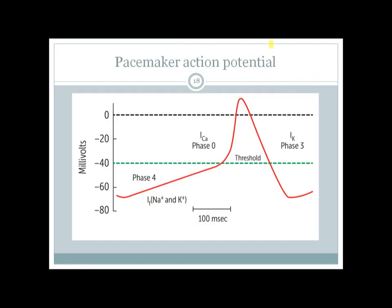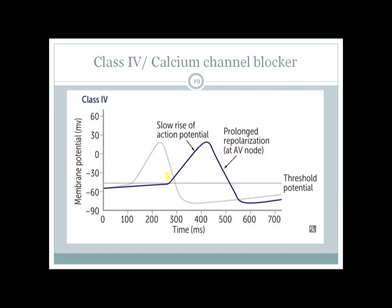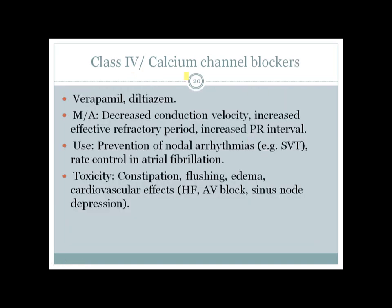Class 4 agents block phase 0 of the pacemaker action potential, which is mediated by influx of calcium ions into pacemaker cells. This decreases the slope of phase 0 and also decreases the slope of phase 4. There is also prolonged repolarization of the AV node. The most important class 4 drugs are verapamil and diltiazem — cardioselective calcium channel blockers, as opposed to the vasoselective nifedipine.